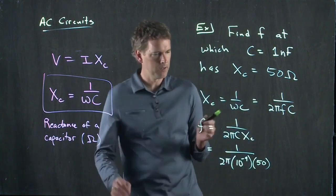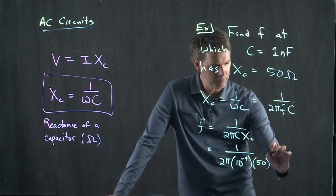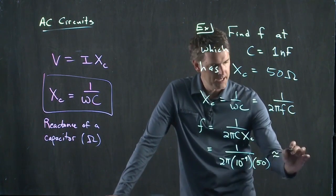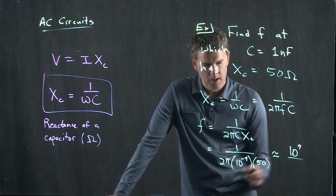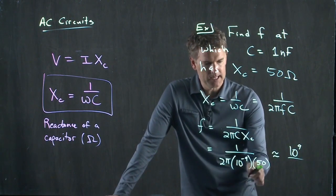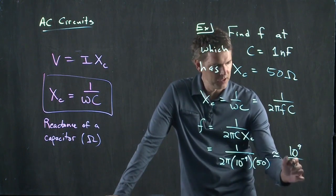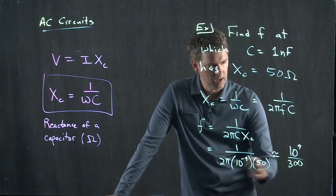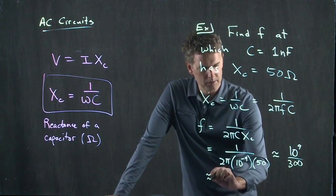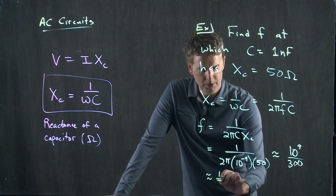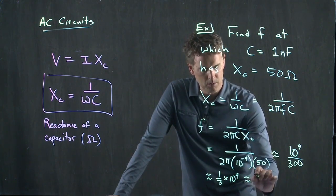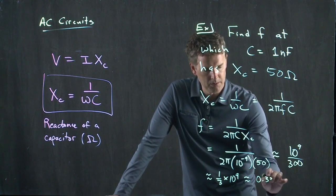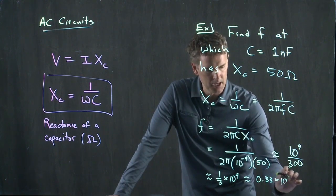So punch those into your calculator, tell me what you get, and I will approximate it here. So the 10 to the 9 goes up top, and I get 2 pi times 50, which is basically 6 times 50, which is 300. And so I'm going to say that this is pretty close to a third times 10 to the 9, or 0.33 times 10 to the 8.